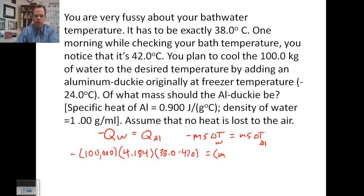The aluminum, we're looking for its mass. Its specific heat is given as 0.900. And we're going to change it to a final temperature of 38 from its original temperature of negative 24. So 38 minus a negative 24 gives us positive 62 times 0.9.